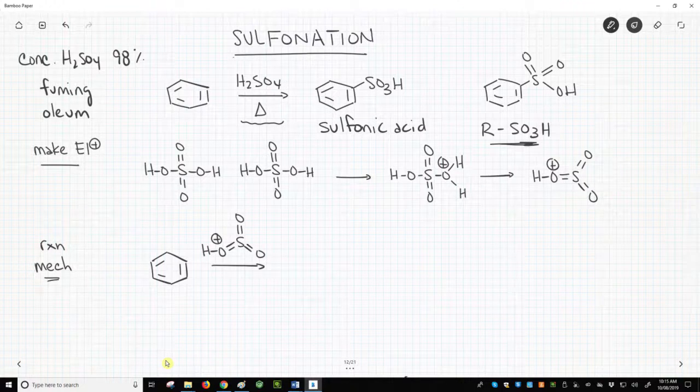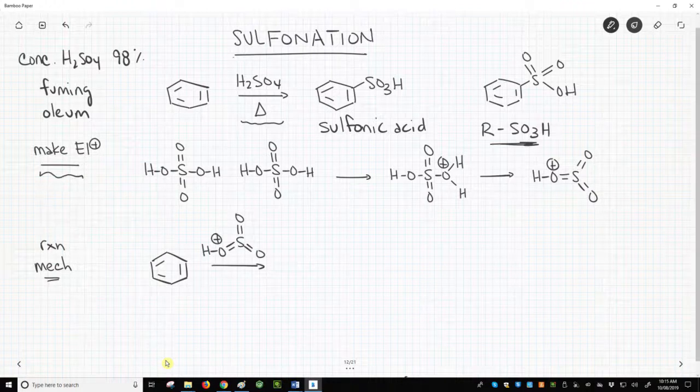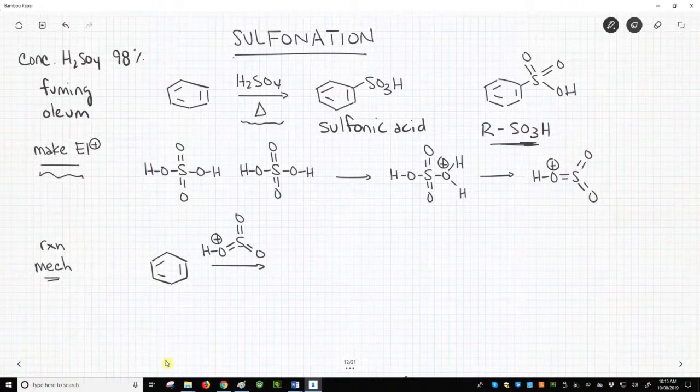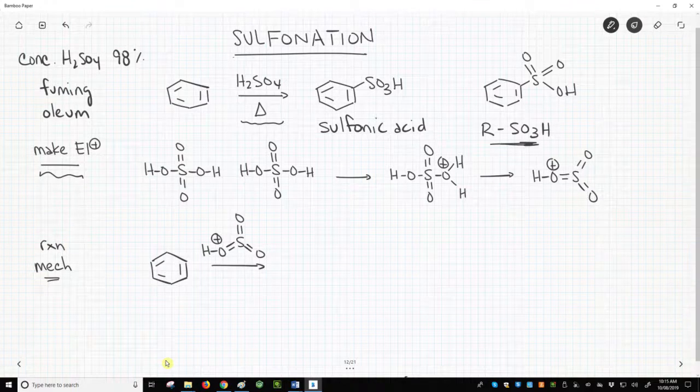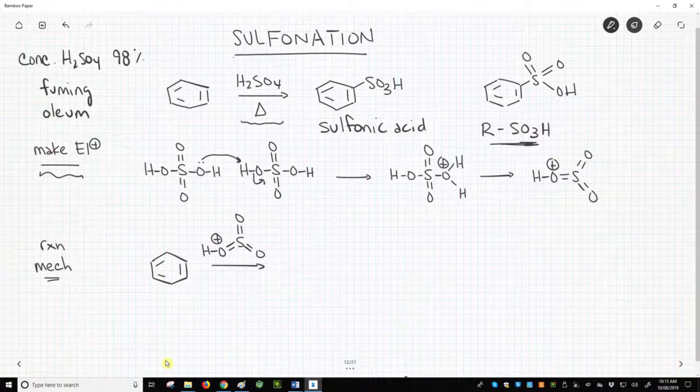The active electrophile in sulfonations is formed by protonating sulfuric acid with another molecule of sulfuric acid. This process forms a leaving group.